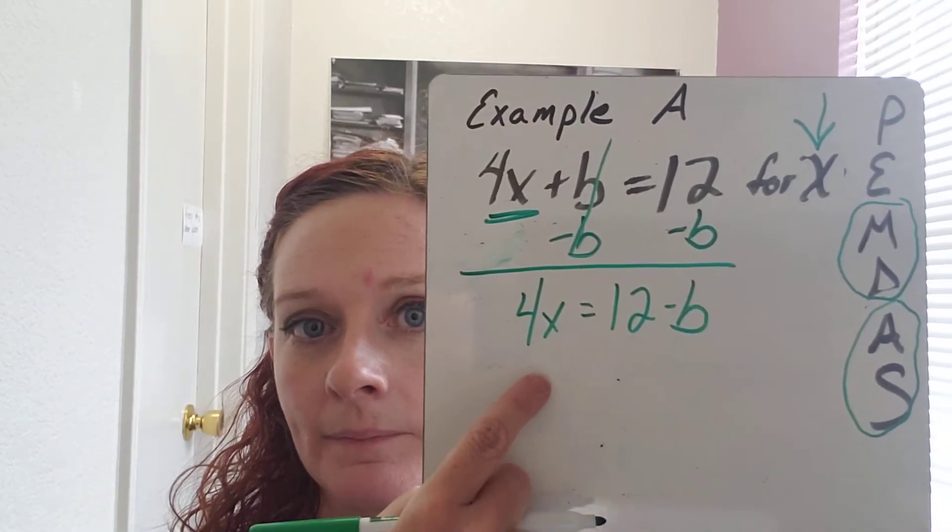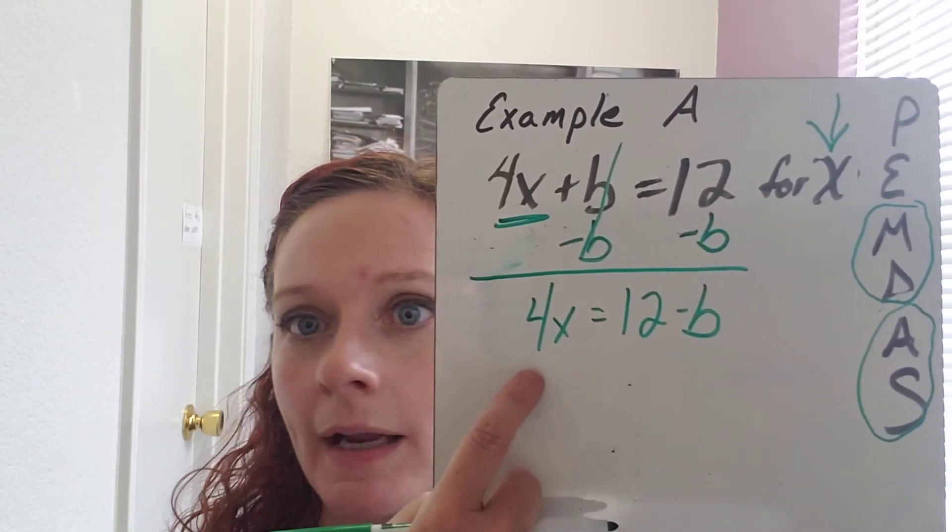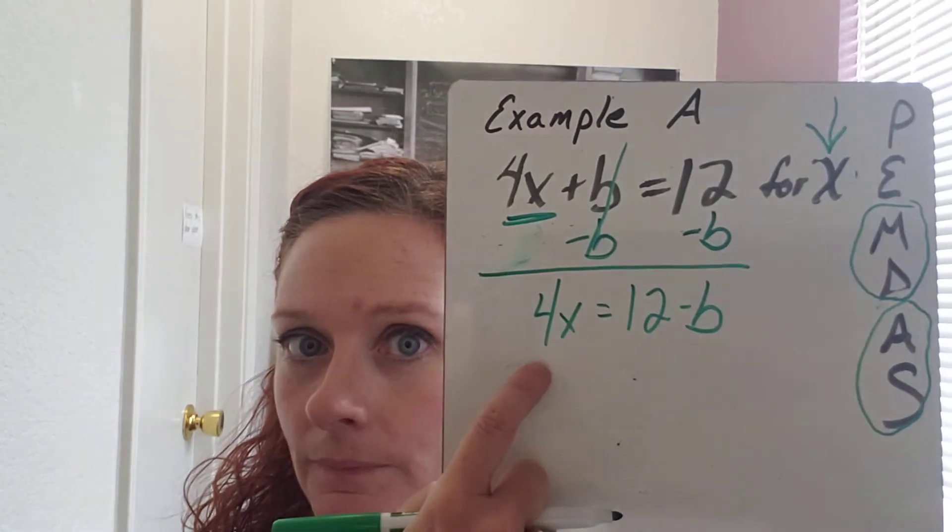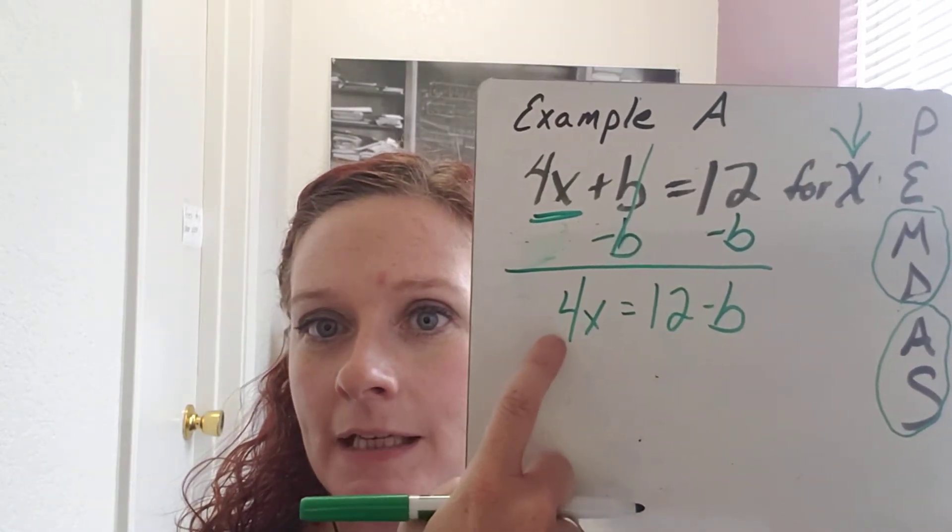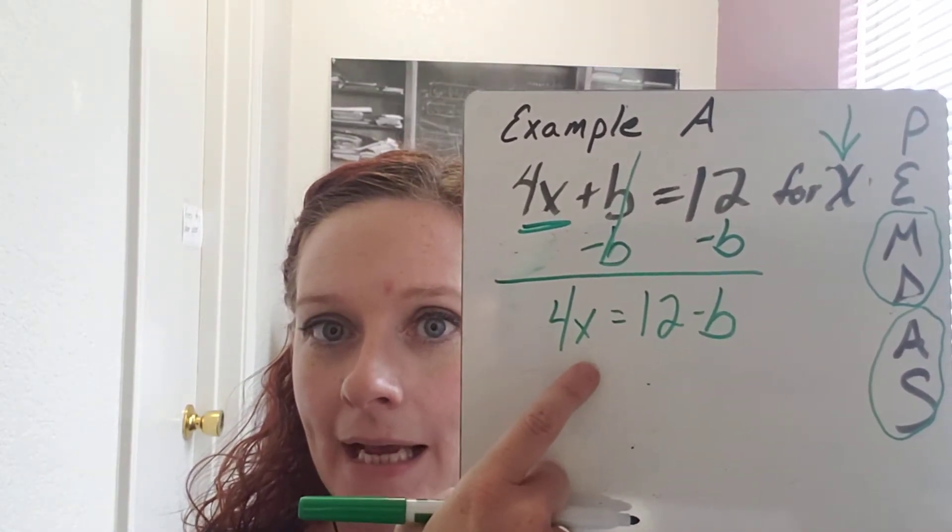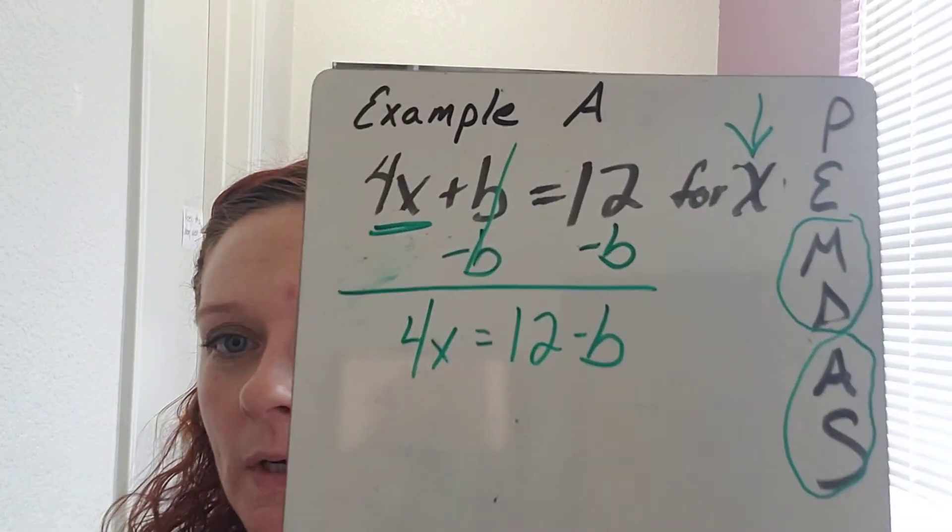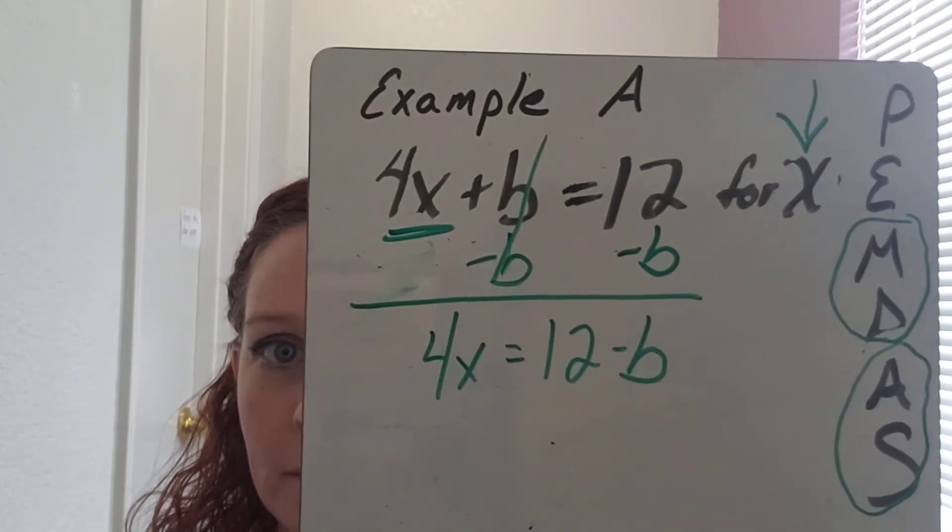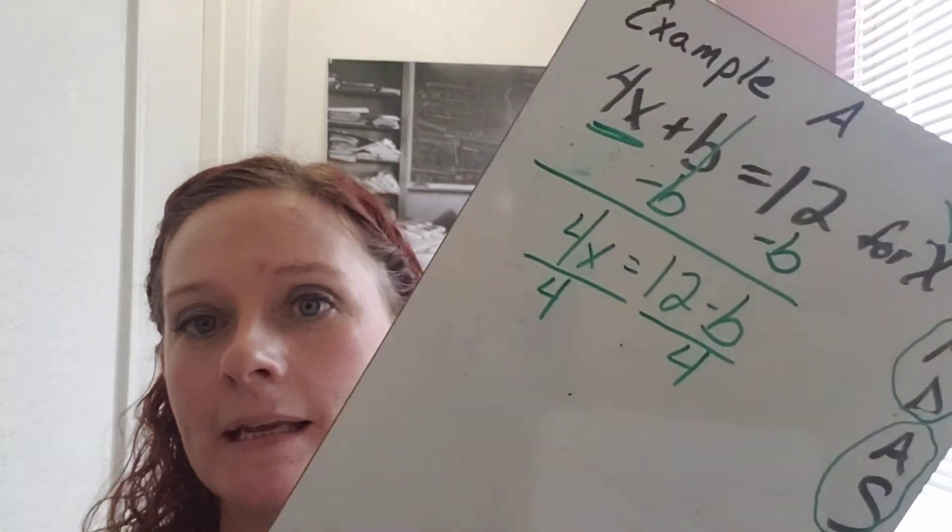Is there any multiplication or division on the side with the X? Yes, there is. There's multiplication. How do you know? You know there's multiplication because it's 4 times X. How do you get rid of multiplication in algebra? That's right. You use division.